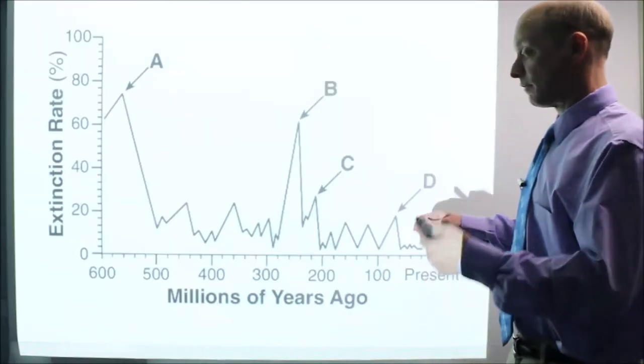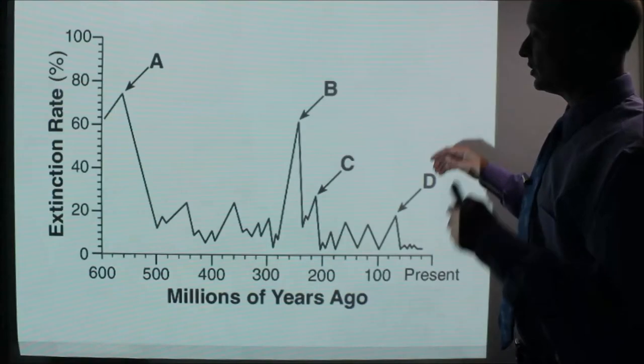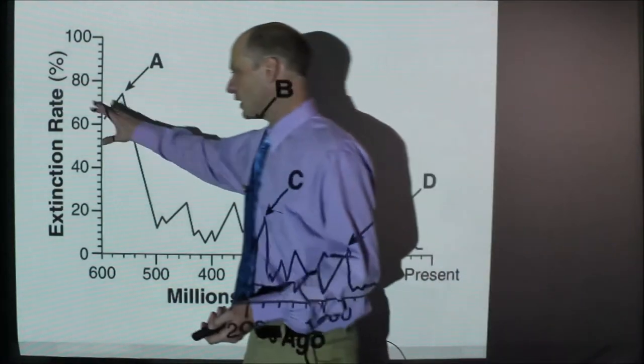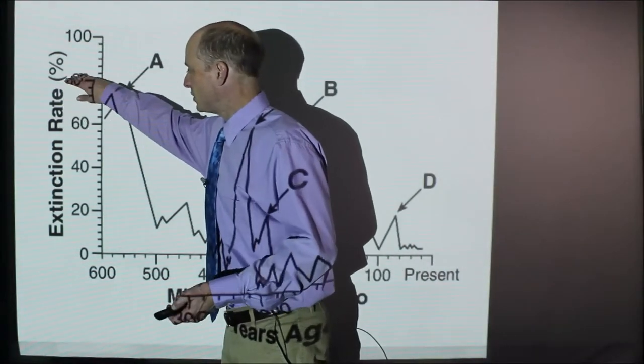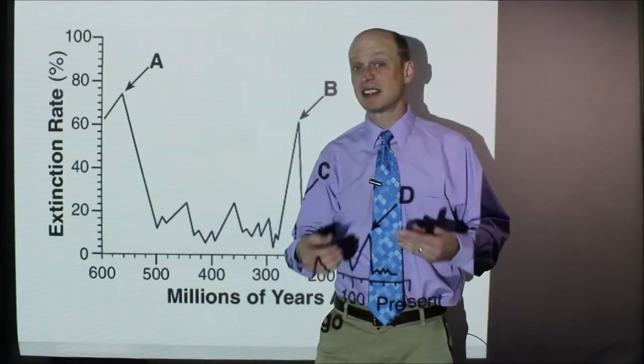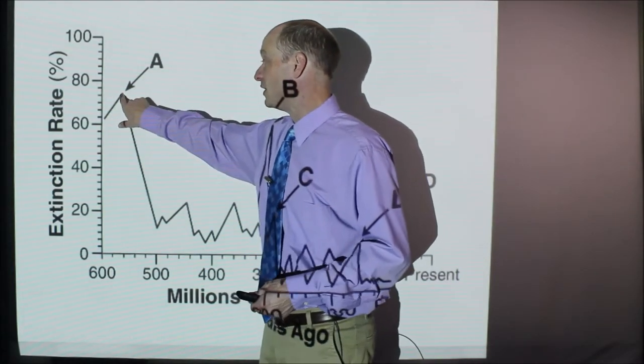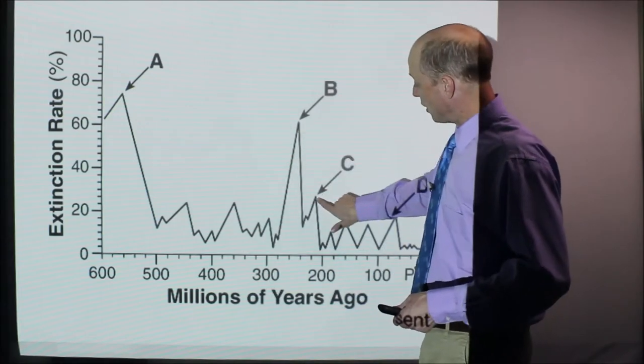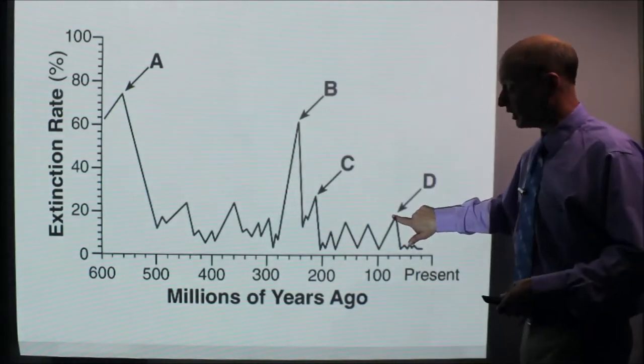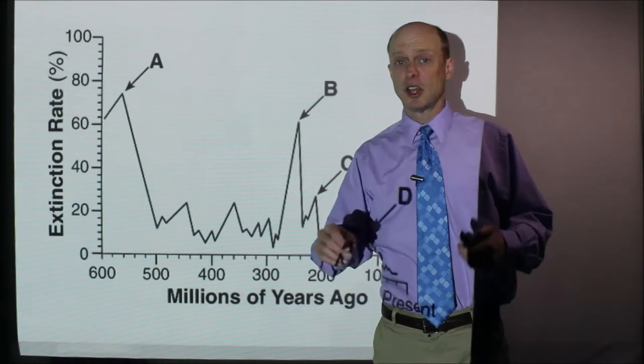This exam question shows mass extinctions through an extinction rate graph. You're looking at what percentage of species that existed on Earth went extinct at specific times. You can see some here in the high 70%, another one here, and another one here.